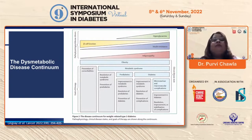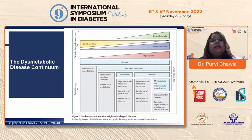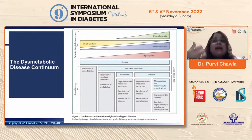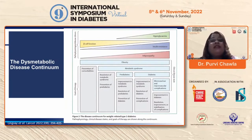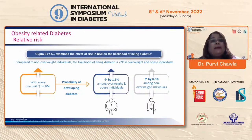At various stages of obesity, you can intervene and prevent comorbidities or prevent the next stage. For example, when somebody is starting to gain weight, if you can prevent further weight gain, you can halt the entire process of developing metabolic syndrome, pre-diabetes, or diabetes, and then the related micro- and macrovascular complications.